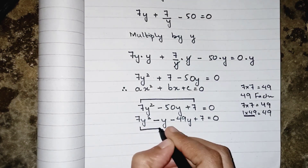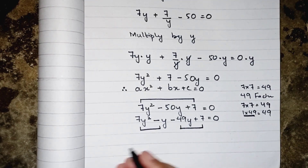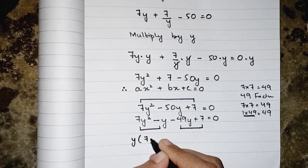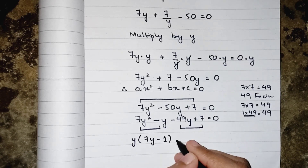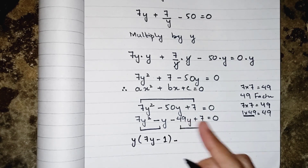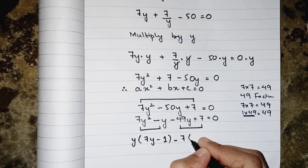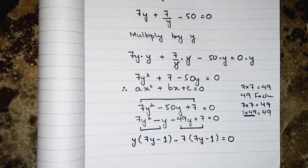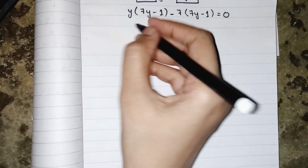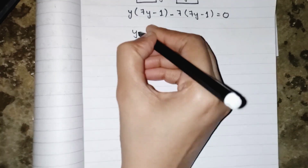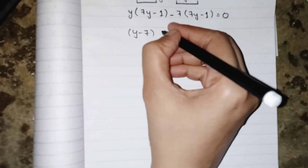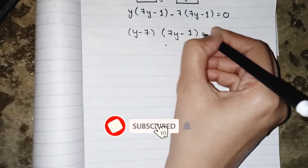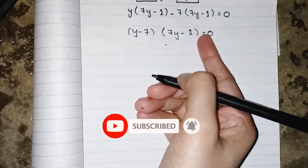Now we take common factors from the first two and last two terms. From the first two, we take y as common, leaving 7y minus 1. From the last two, both are multiples of 7, so we take 7 as common, leaving 7y minus 1 equals to 0. So we get (y - 7)(7y - 1) equals to 0.